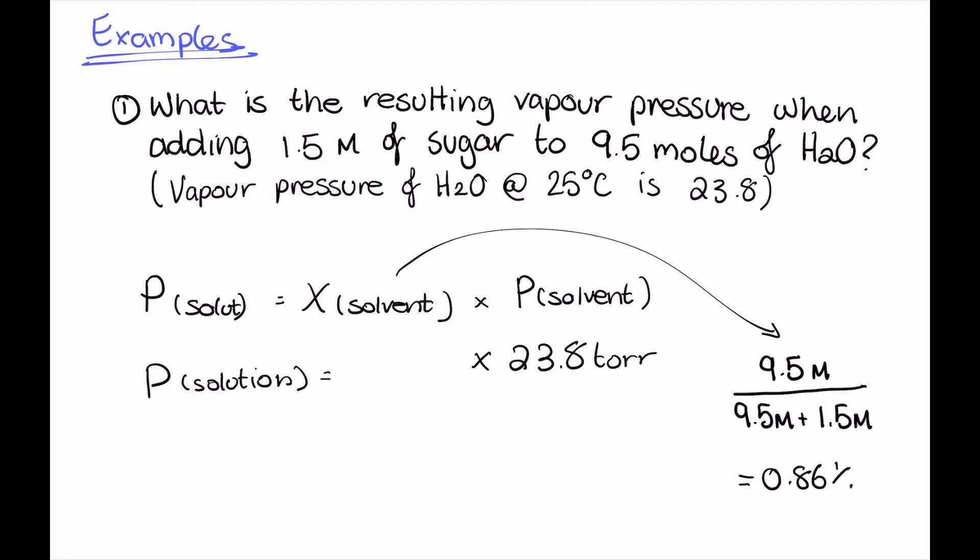So all we have to do is add this to our calculator and we'll be able to find the answer. And that is approximately, so the vapor pressure of that resulting solution is approximately 20.468 torr.